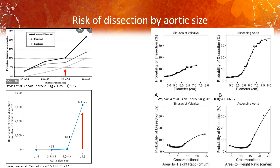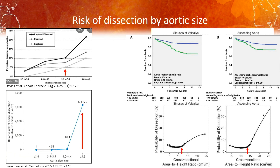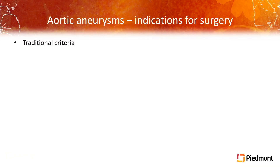The Cleveland Clinic group has looked at this specifically for bicuspid valves, examining both the root — the sinuses of Valsalva — and the ascending aorta, and you can see inflection points for the risk of dissection around the mid-50 to 55 millimeter range. They've also looked at this by indexing the cross-sectional area of the aorta relative to the patient's height, and picking a cutoff of around 10 square centimeters per meter of height, there's a significant survival difference — true both at the sinuses of Valsalva and the ascending aorta.